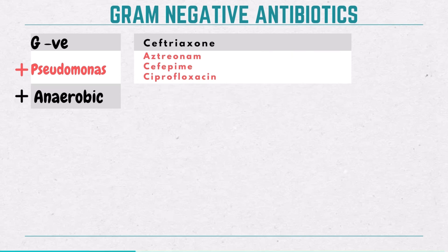Now, let's say you need to tackle anaerobes too. Your go-to drug is piperacillin-tazobactam, also known as Zosyn. It's a fantastic option for mixed infections.